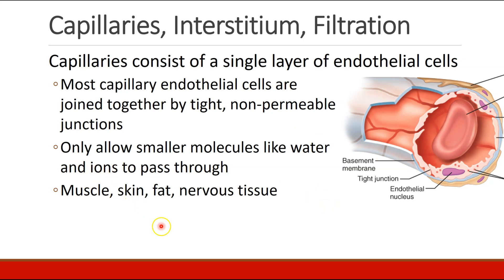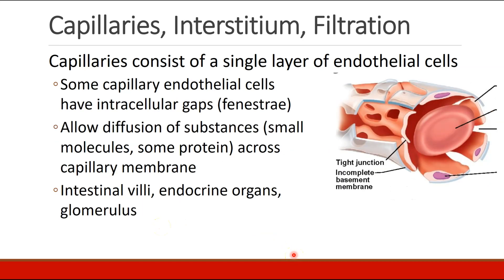Muscle, skin, fat, and nervous tissue all have these kinds of capillaries. There are other capillaries which have fenestrae, or gaps in them, and that allows small molecules and some proteins to go across. You mostly see this in the intestinal villi and some endocrine organs and in the glomerulus.